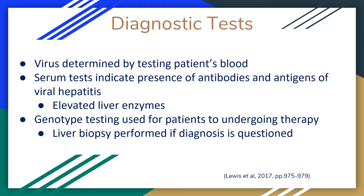Hepatitis B virus DNA quantitation indicates ongoing viral replication, and hepatitis B genotyping indicates the genotype of the virus, which can be helpful in determining treatment. The marker for acute hepatitis C virus is the antibody to hepatitis C; quantitation and genotype can also be determined. The presence of hepatitis D antibody and hepatitis D antigen are indicators of past or current infection. For hepatitis E, anti-HEV immunoglobulin M and G are present one week to two months after onset of illness, and quantitation indicates ongoing viral replication.